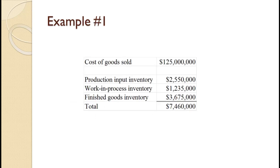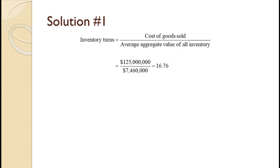In this example, last year a firm had cost of goods sold of $125 million. The average value of inventory is shown on the slide, totaling $7,460,000. Inventory turns is calculated as the cost of goods sold of $125 million divided by the average aggregate value of all inventory of $7,460,000. That equals 16.76. This number should not be rounded to a whole number.